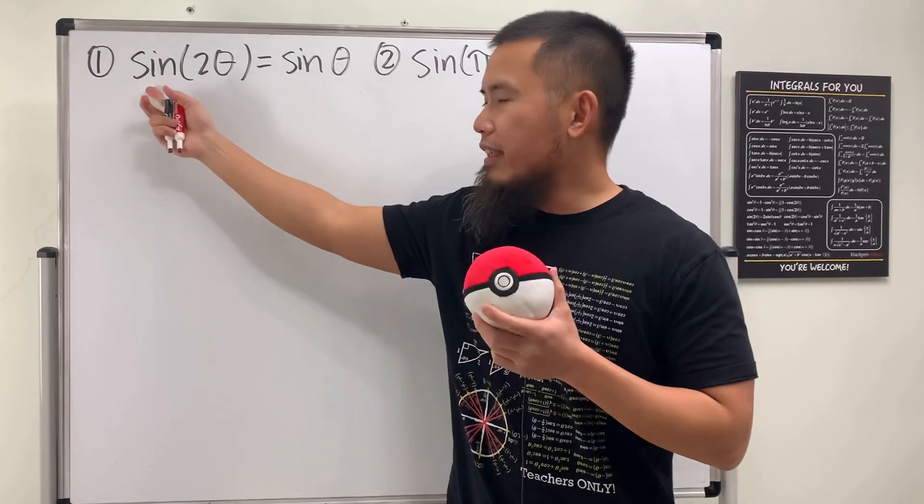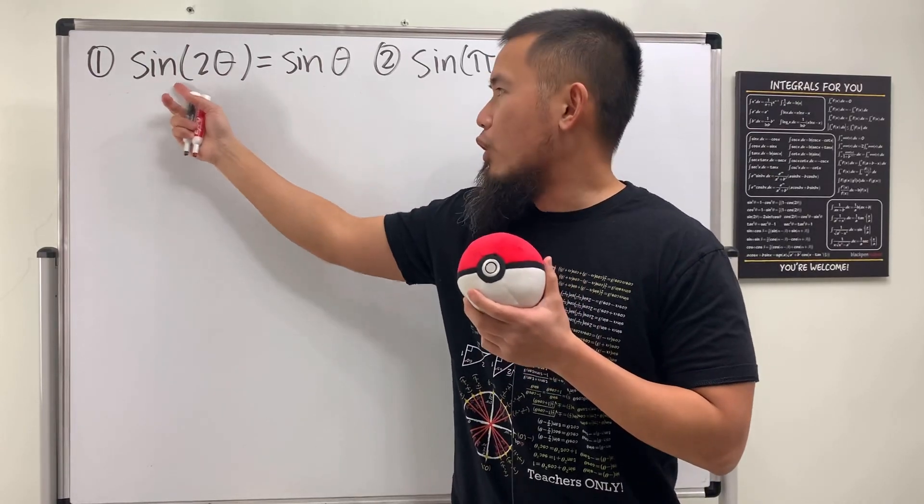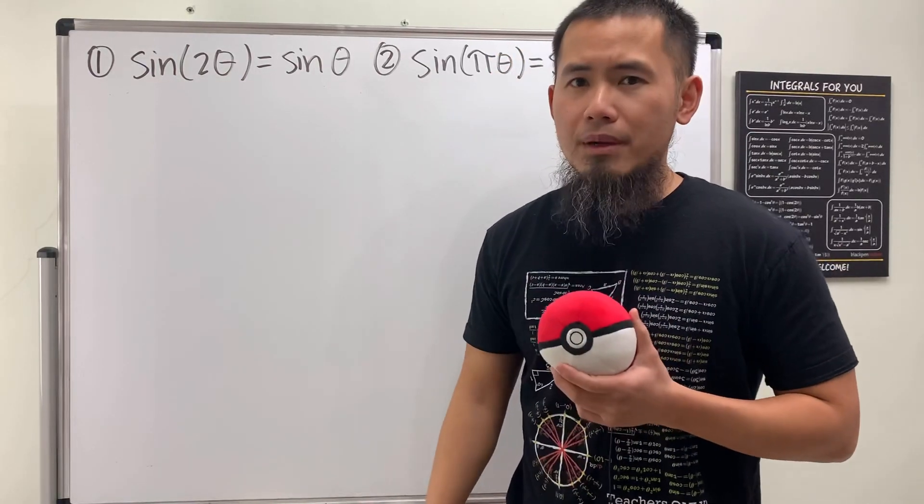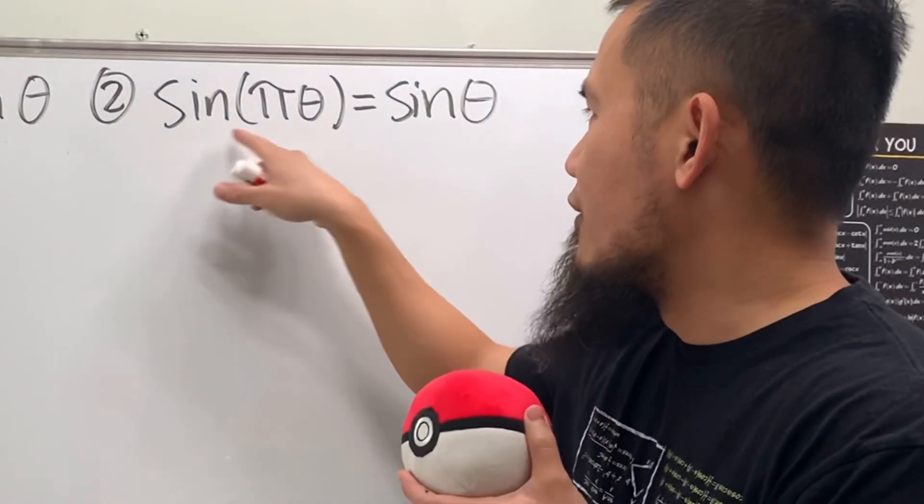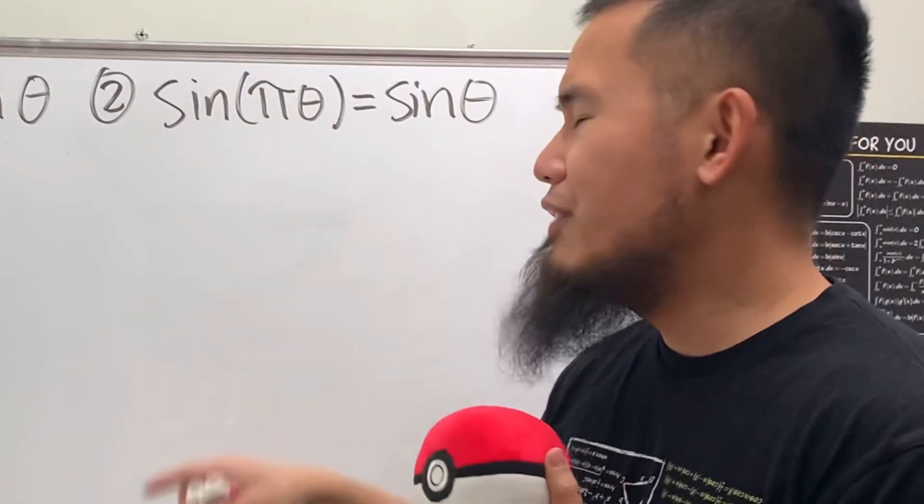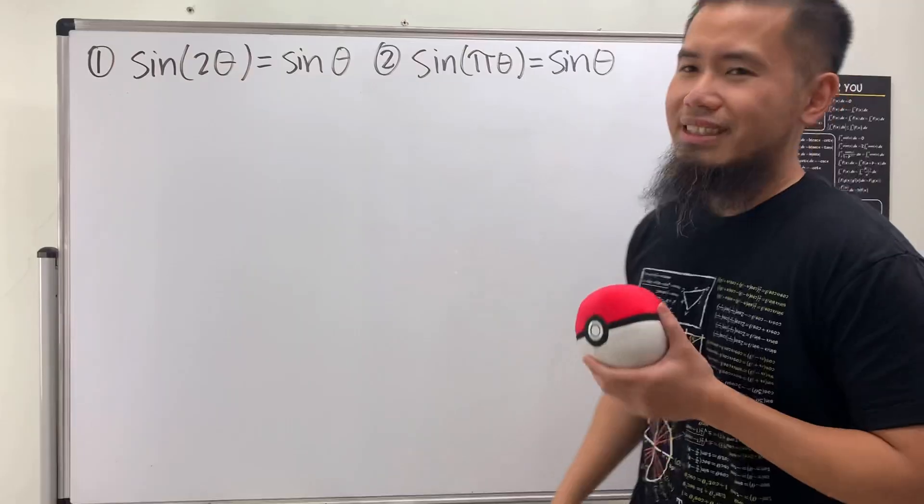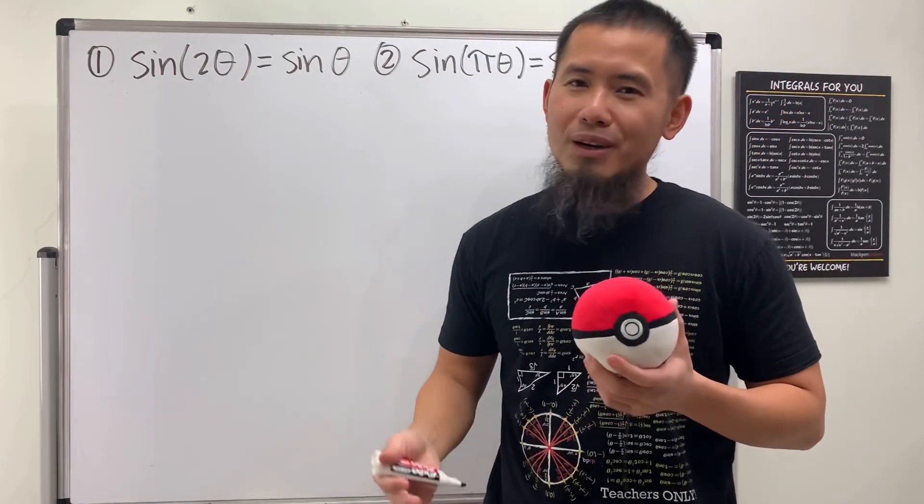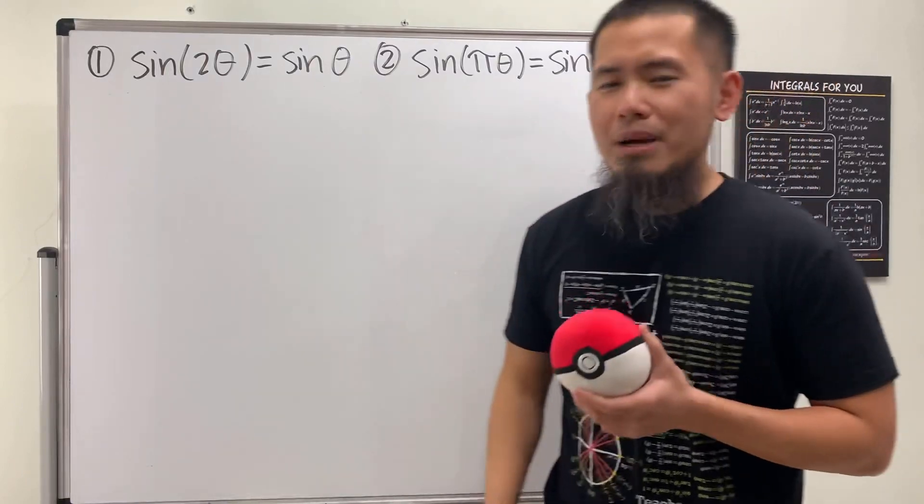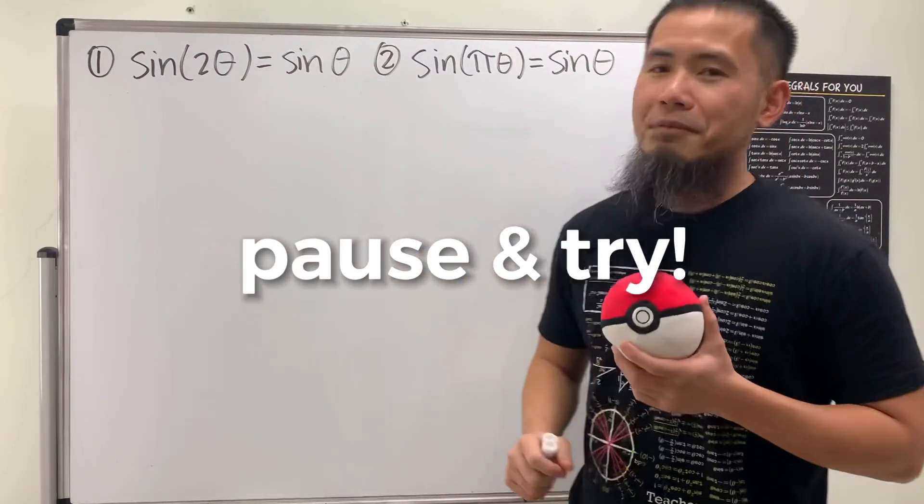Maybe for the first one, you are thinking to use the double-angle identity for sine 2 theta? Sure, but can you do the similar thing for sine of pi theta? Do we even have an identity for this? I don't know. If you do know about an identity for this, please let me know. But anyway, please pause the video and try them first.